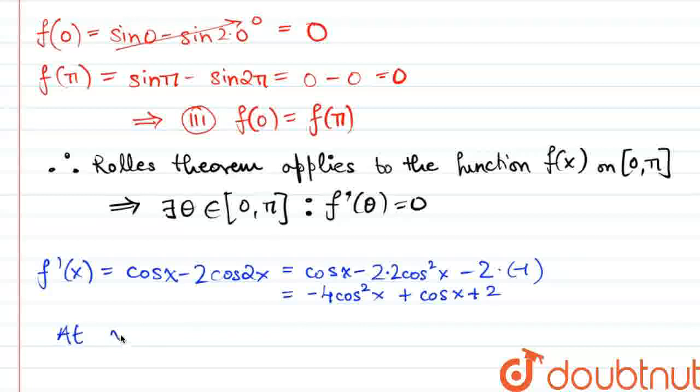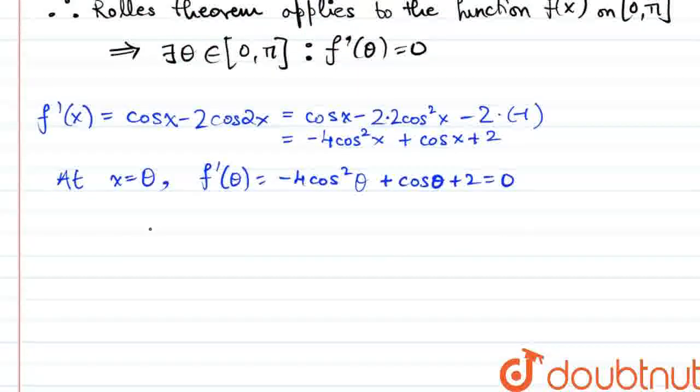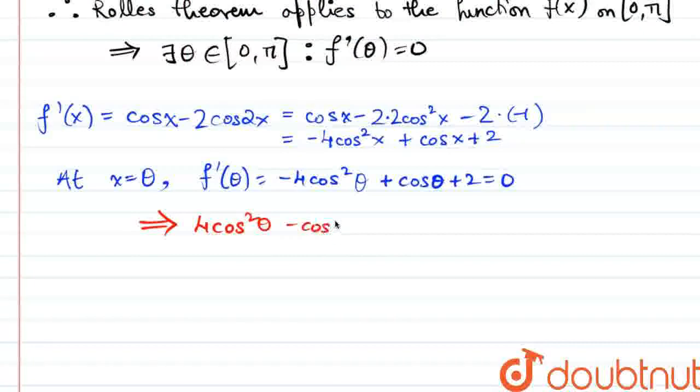Now, at the point theta, f dash of theta will be equal to negative 4 cosine squared theta plus cos theta plus 2, which is equal to 0 according to Rolle's Theorem. Multiplying the entire thing by negative 1, 4 cos squared theta minus cos theta minus 2 is 0.